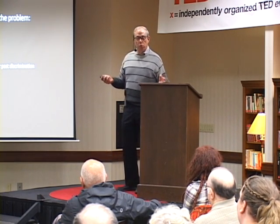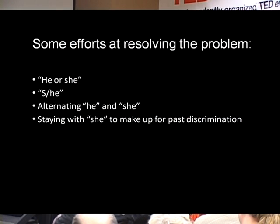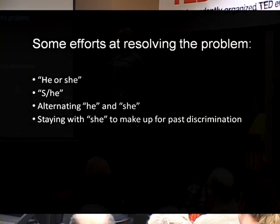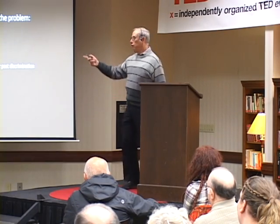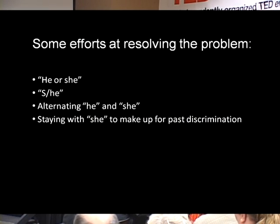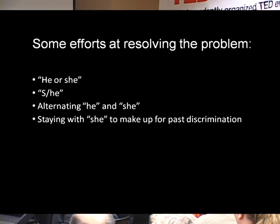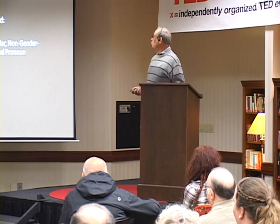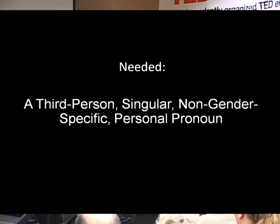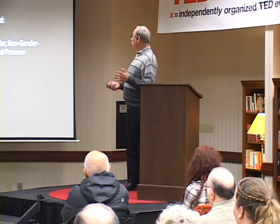So what have we done to try to resolve this problem? 'He or she.' Now, what all languages do is try to make things as simple as possible, and 'he or she' is a long way of saying something. Second, you may have seen in writing: 's/he' — I don't know how you pronounce that. Or you alternate 'he or she,' trying to remember whether you said 'he' last time so it has to be 'she' this time — which you can't keep track of in speech. Or staying with 'she' to make up for past disadvantages. But none of these works. So what we need is a third-person singular non-gender-specific personal pronoun. Ta-da!